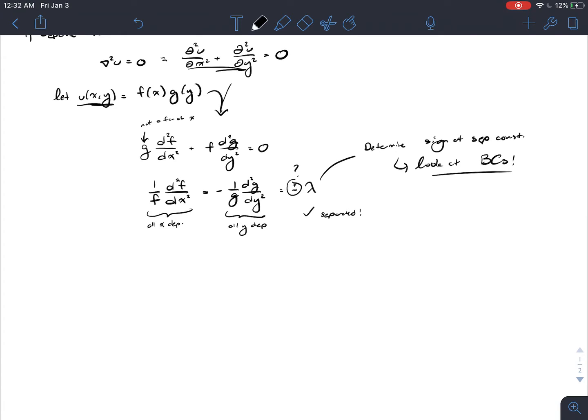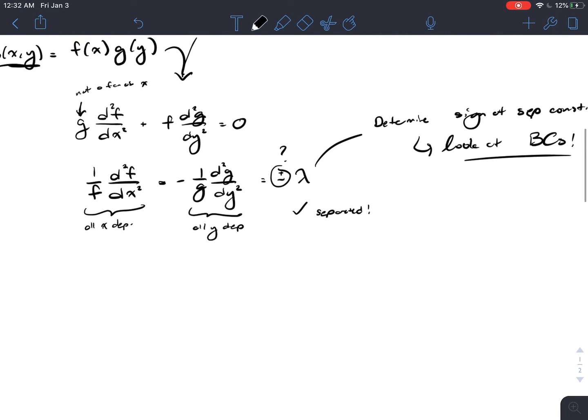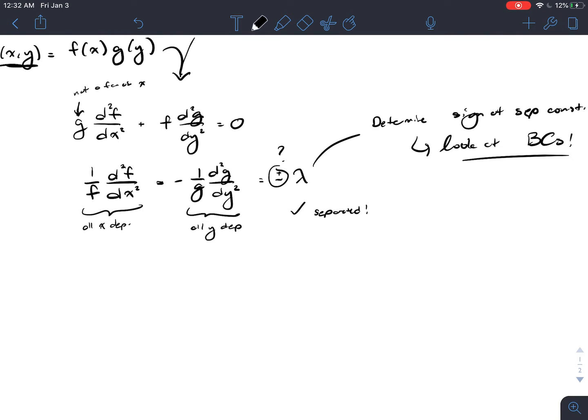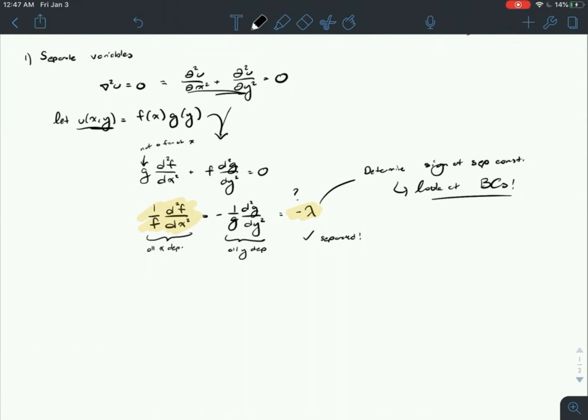For more details on how to determine oscillatory versus exponential, I will make a future video covering this specific idea. But this concept of determining the sign of the separation constant definitely comes with time and practice. Going back to our problem where we have separate variables, remember that in the x direction we want oscillatory solutions. Based on our separation variables, we want to define our separation constant as negative. The reason for this is in our differential equation for x, we're going to have solutions in sine and cosine, which are oscillatory.